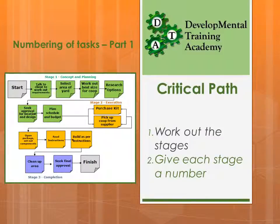The first thing we need to do is number our tasks, which requires us to divide our project into stages. There could be 3, 10, or 100 stages depending on the size of your project. Our chicken coop project has been divided into 3 stages. Stage 1 is concept and planning — that's all of the green section. Stage 2 is execution — that's all of the yellow section. Stage 3 is completion — that's the blue section. Each stage has a number, which helps us number our tasks.